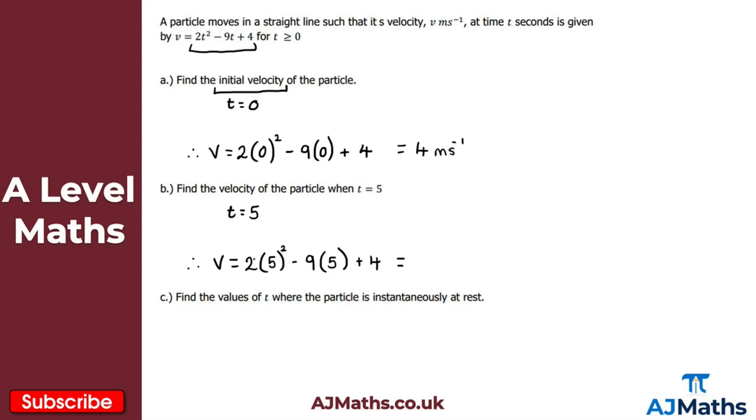Let's evaluate this. Well, five squared is 25 times by two would give me 50. Nine times five is 45, so that's minus 45 and then plus four. So 50 minus 45 would give me five plus four, I get nine there. So the velocity of the particle when t is equal to five is nine meters per second. That's our solution to part B.